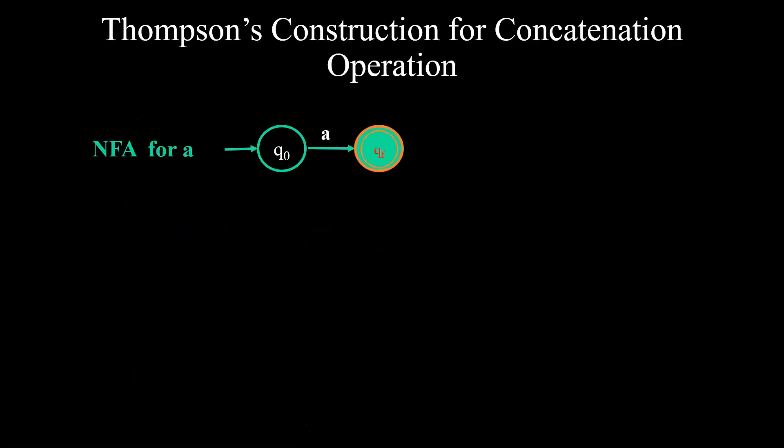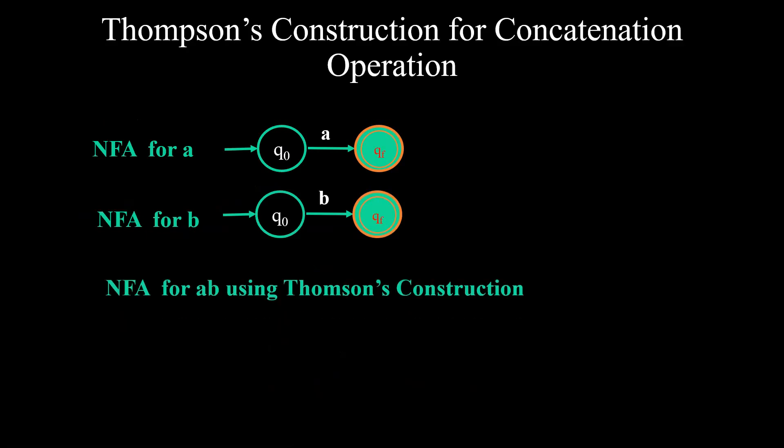Now I talk about second operation which is concatenation. Say for example, I have an NFA for a, I have an NFA for b. Now I want to generate an NFA for ab with Thompson's. This is concatenation. No epsilon move is required. I'll just have a start state with q0, move towards q1 and then finally to qf.